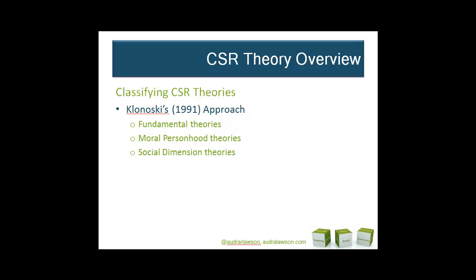We'll begin with Kalinowski's classification of CSR theories. His approach focuses on three categorizations. First, he characterizes fundamental theories as those that claim corporations are only legal artifacts and the only social responsibility of business is creating profits in compliance with the laws. Second, moral personhood theories focus on corporations as moral actors and their moral agency — corporations can be held morally accountable for their actions, and CSR is fundamental to them. Finally, social dimension theories are grounded by political and ethical theories connecting the corporation to larger societies.